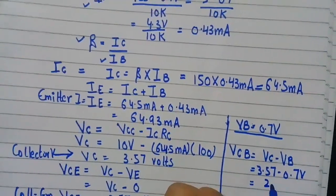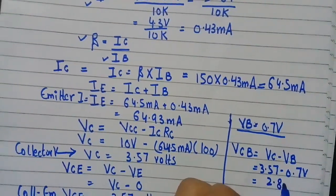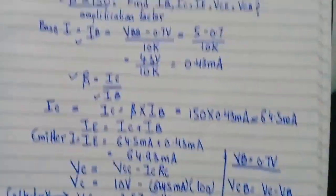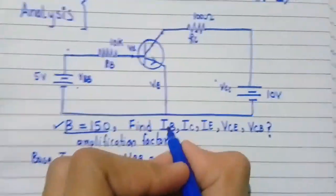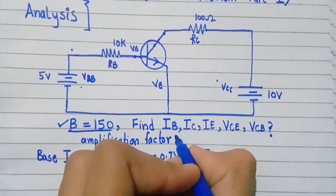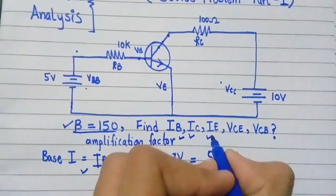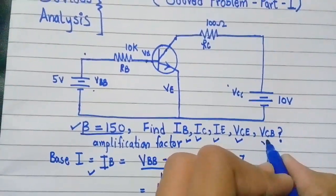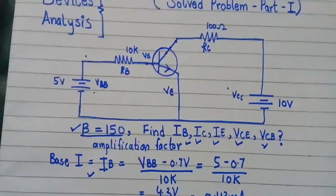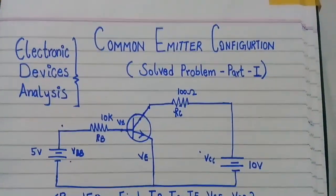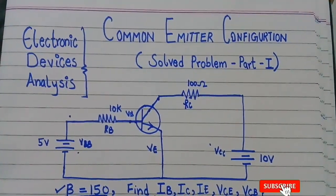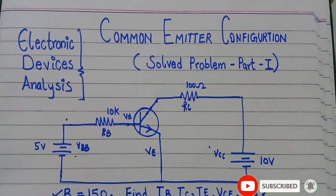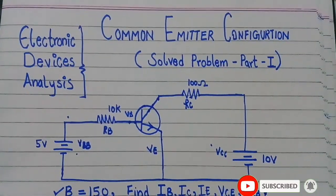So that's it for today. We found all the parameters: the base current, the collector current, the emitter current, the collector-emitter voltage, and the collector-base voltage. If you like our video, press the like button and subscribe to our channel for more updates. Thank you.